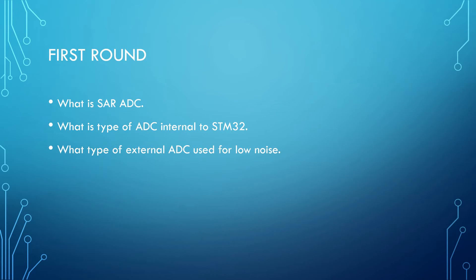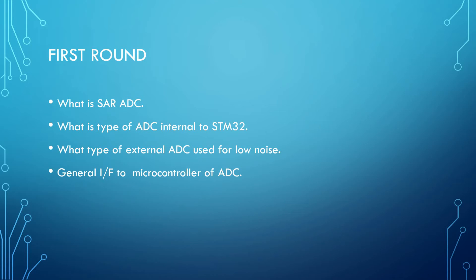He also asked me about external ADC I have used, and then asked what type of external ADC is used in low-noise applications — the answer is Delta Sigma Modulation ADC. He asked about the interface of external ADC to the microcontroller. I told him it depends on the chip manufacturer and can be UART-based, SPI-based, or I2C-based.